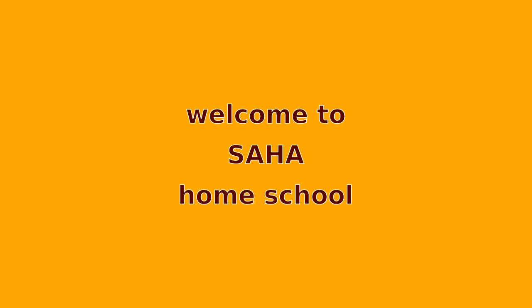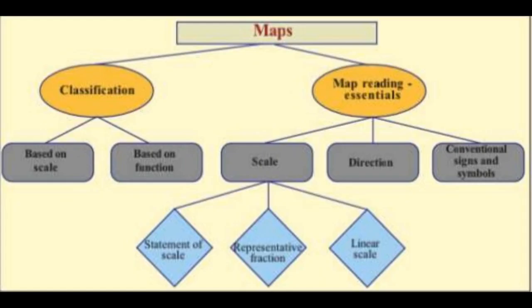In this chapter, we study about the classification of maps and important factors for map reading like scale, direction, signs, symbols, etc.